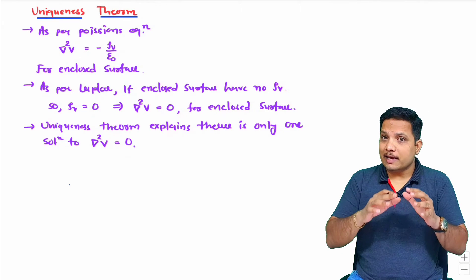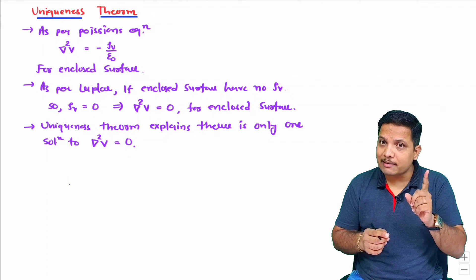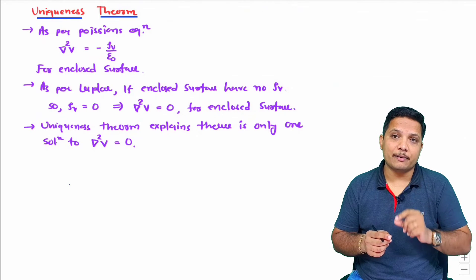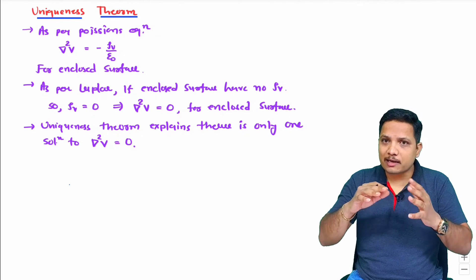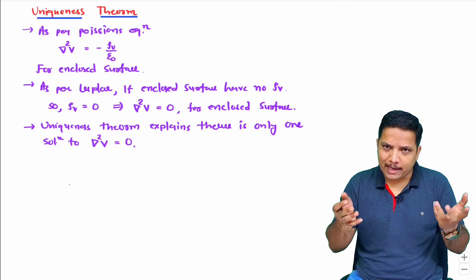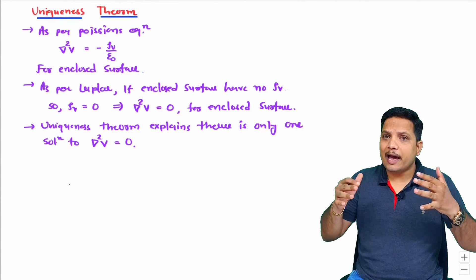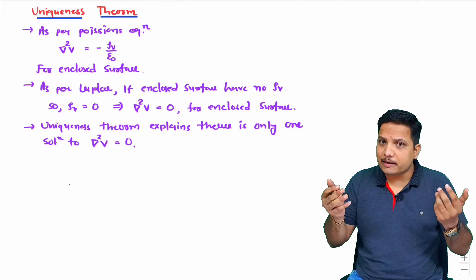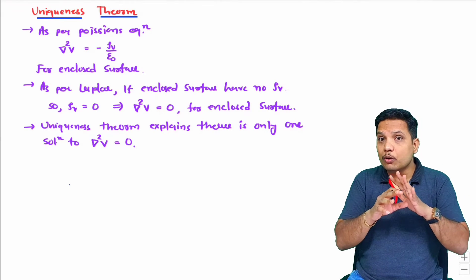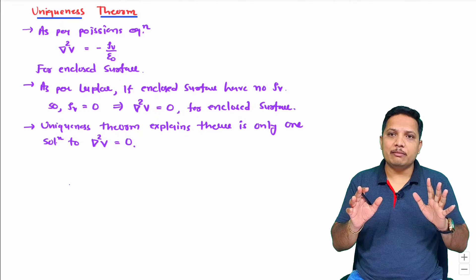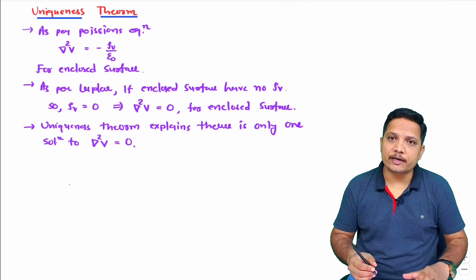The uniqueness theorem states there is a unique solution inside the surface provided there is no volume charge. This means inside the surface there is no maxima and no minima except on the surface. On the surface, maxima and minima are defined by external parameters, but inside the surface there will be no maxima and minima — there will be only one solution.